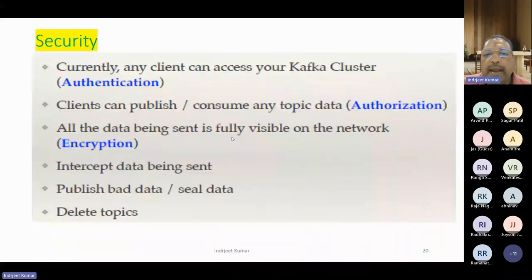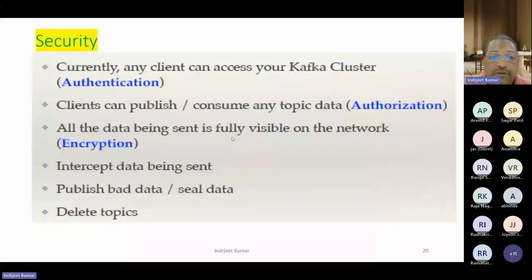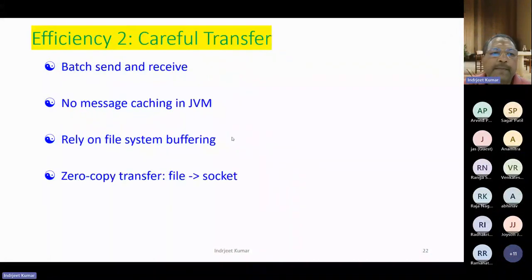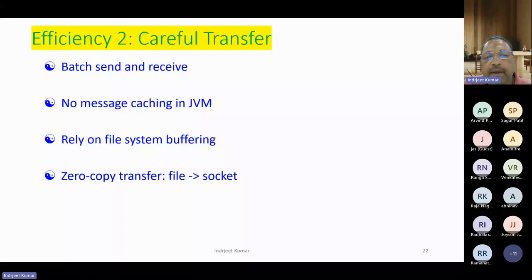Currently any client can access your Kafka cluster. For authentication, you can authenticate and give particular authorization. Kafka is having a security chamber we can implement. Regarding topics — a topic has an ever-growing log. A log is nothing but a list of files and a message is addressed by the log offset. Kafka does not transfer each log individually — they always batch it. That's why Kafka is faster: batch send and receive, no message parsing in the JVM, relying on system buffering, and zero-copy transfer.